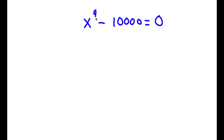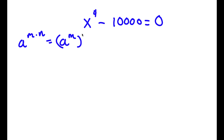Alright, so I have x to the power of 4 minus 10,000 is equal to 0. Now, if I have something in the form a to the power of m times n, this is the same thing as a to the power of m to the power of n. So x to the power of 4, I'm going to rewrite as x to the power of 2 times 2.